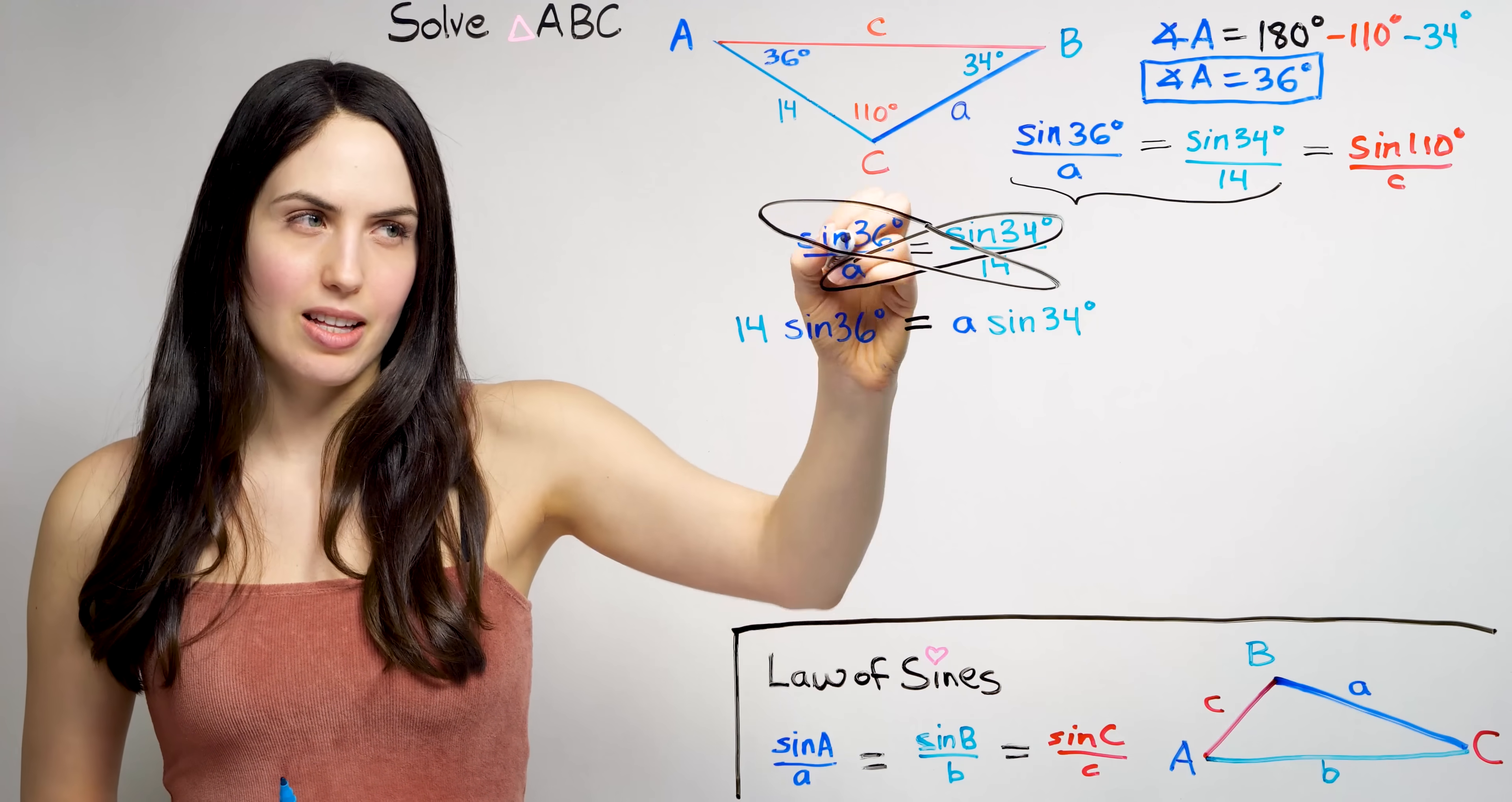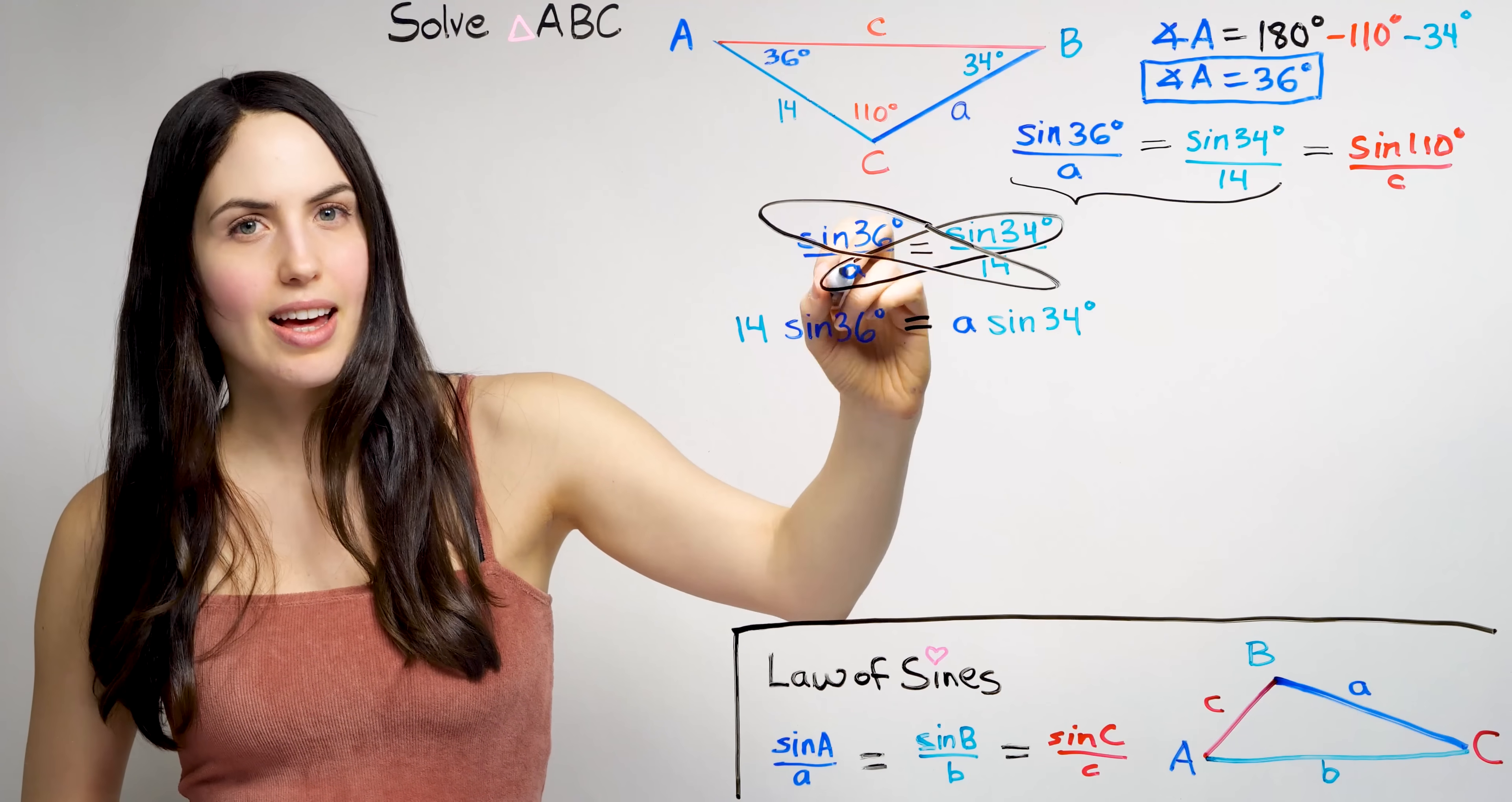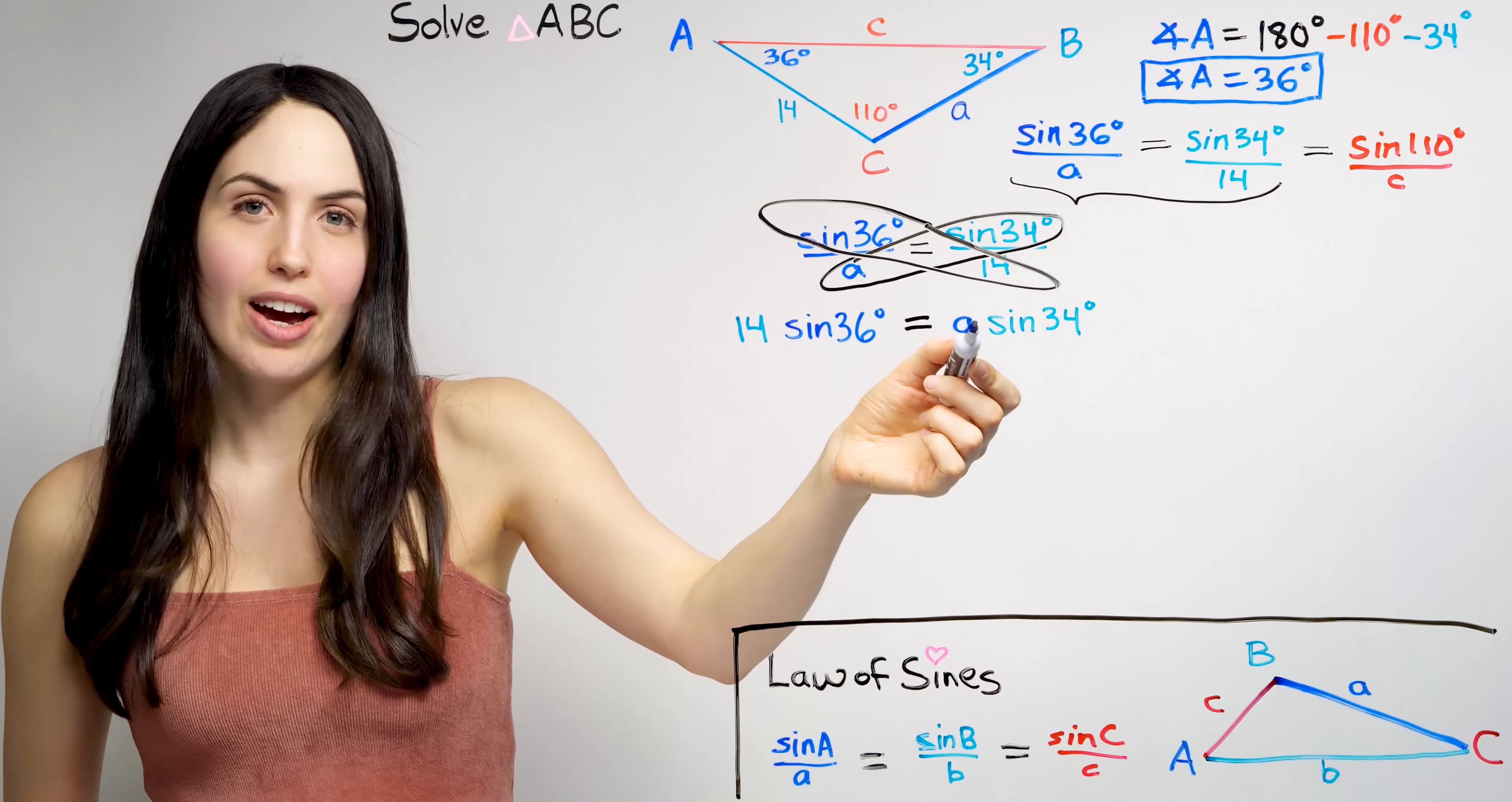By multiplying these two diagonally, 14 times sine 36 degrees, and setting it equal to the other two terms multiplied diagonally, A times sine 34 degrees. And this is still a true statement. This is a valid equation after you do that.